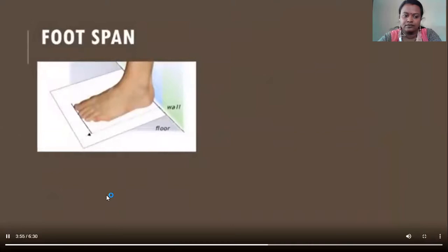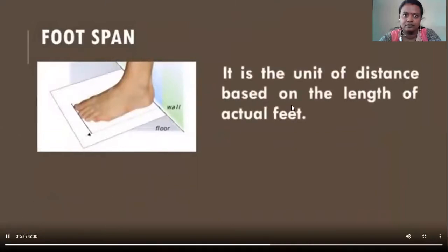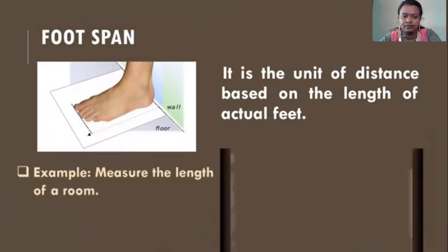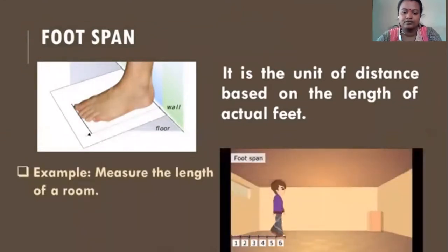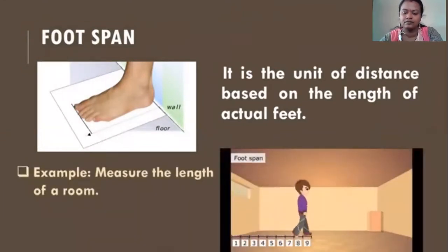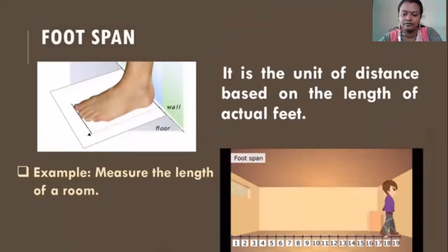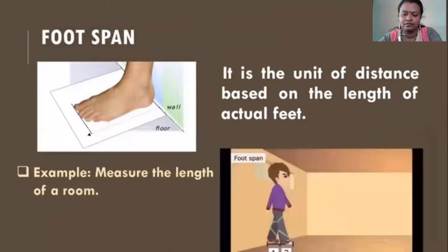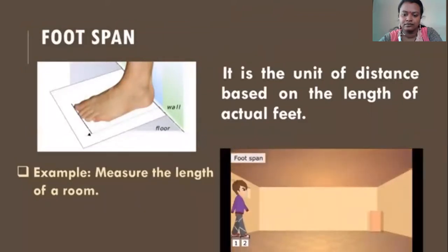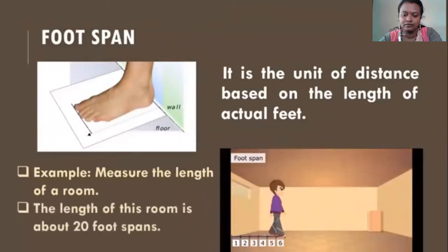Foot span is a unit of distance based on the length of actual feet. For example, let us measure the length of a room using foot span. So we are going to measure the length of this room using foot span. The length of this room is about 20 foot spans.